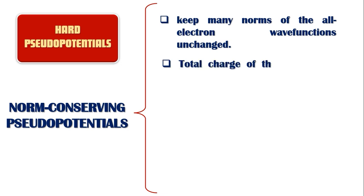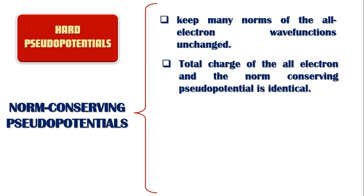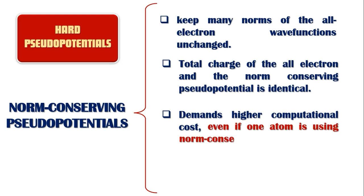For example, the total charge of the all-electron calculation and the calculation that is using a norm-conserving pseudopotential is identical. But that conservation of norms comes with a cost: a higher cutoff energy.